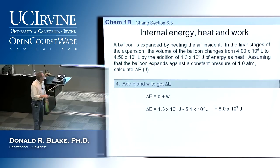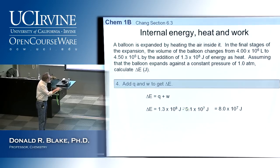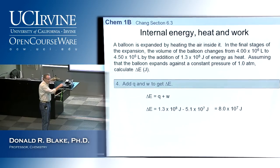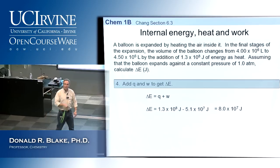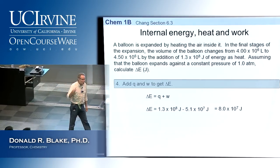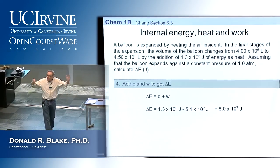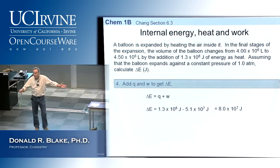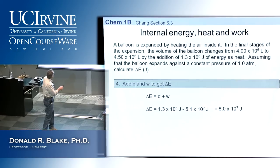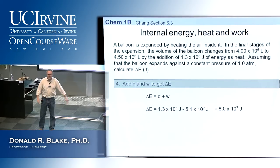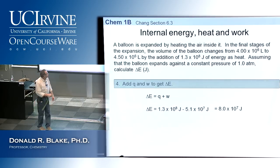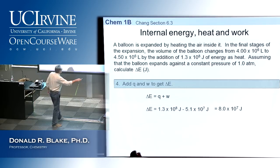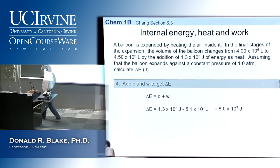This number cannot be more negative than the work term. It's impossible — otherwise we could have a perpetual motion machine. We'd say let's heat up a hot air balloon, put in this much energy and get out even more energy from work. It just doesn't work that way. The internal energy value is always positive in this case.